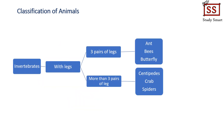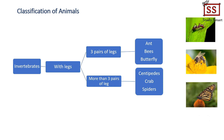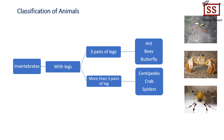Now let's discuss invertebrate animals. We can categorize them based on the number of legs they possess. Animals such as ants, bees, and butterflies have three pairs of legs, while centipedes, crabs, and spiders have more than three pairs of legs.